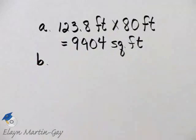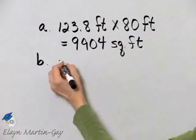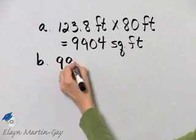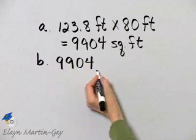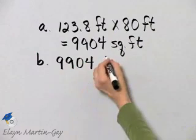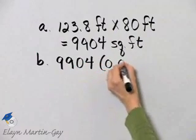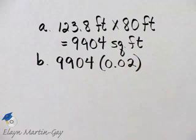So how do we find out how much insecticide she needs to purchase? Well, remember, we have this as the area of her lawn. And then remember, we're told that she needs 0.02. And what was that?